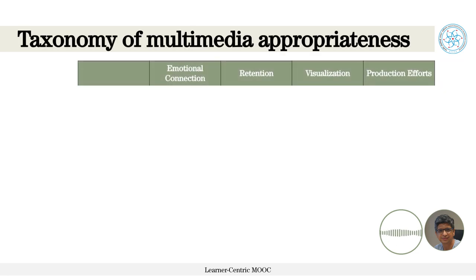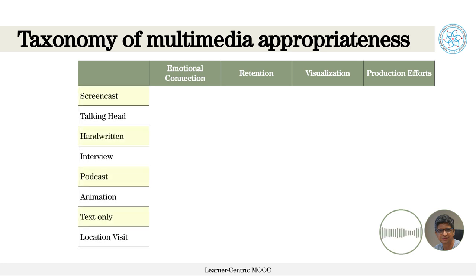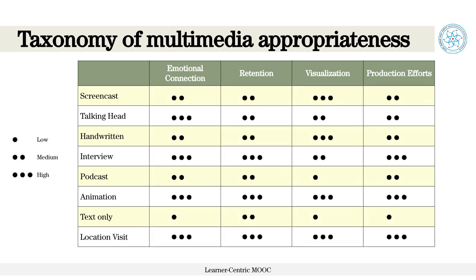We have identified four important attributes that every medium brings, and in this table we show which medium can score high on a given attribute. The four attributes are: first, emotional connect — unless the learners' attention is captured, there is no point; second, retention — whether learners retain the educational content; third, visualization — does the medium support visualization; and fourth, production efforts — how much effort goes into creating that medium.